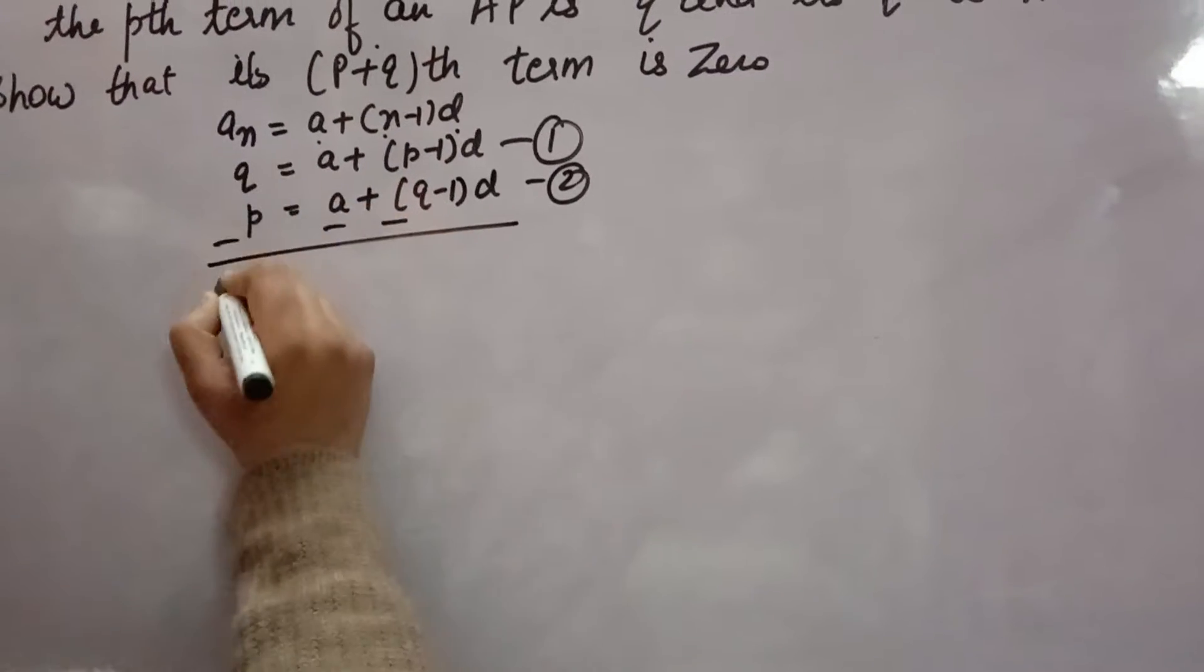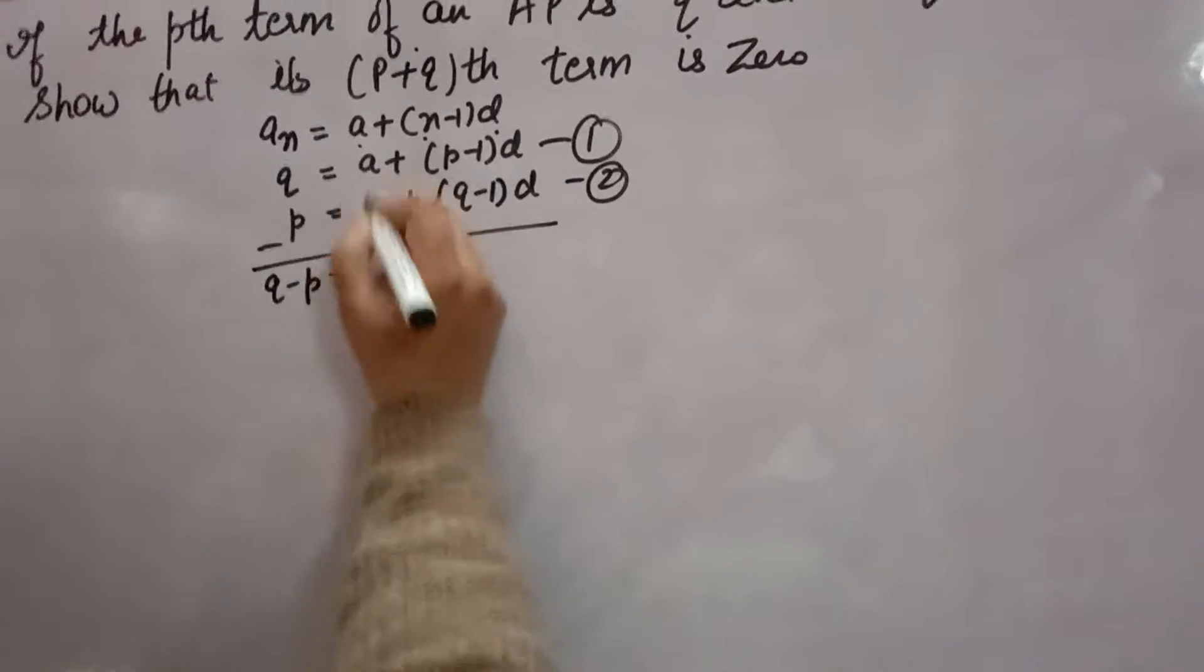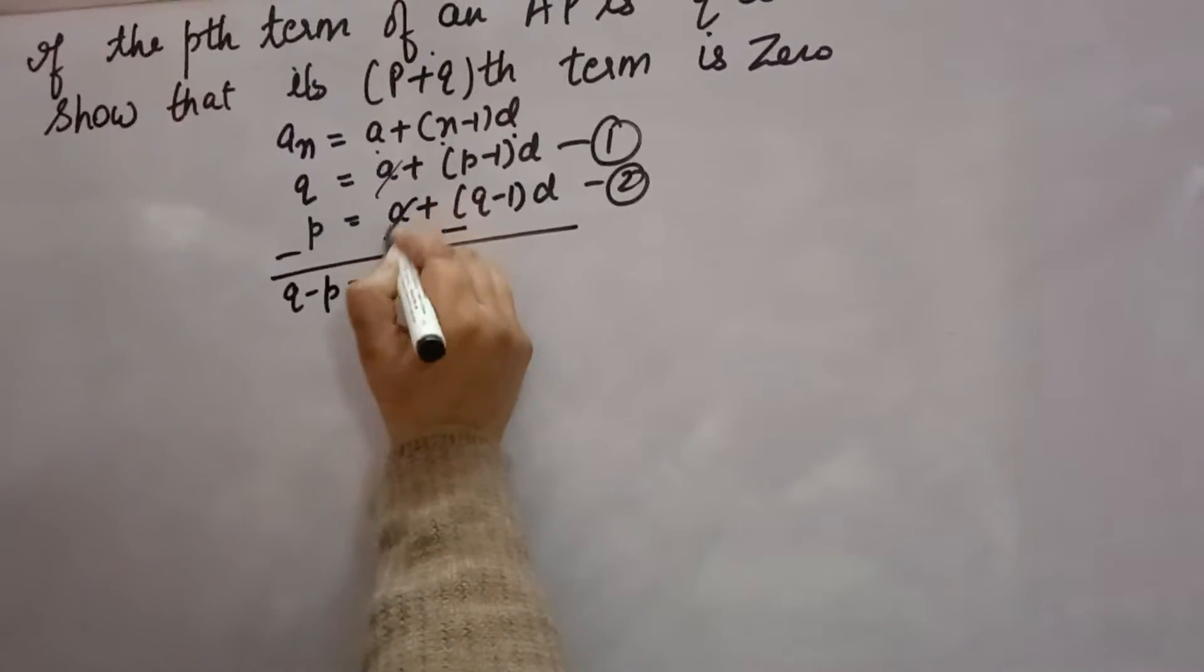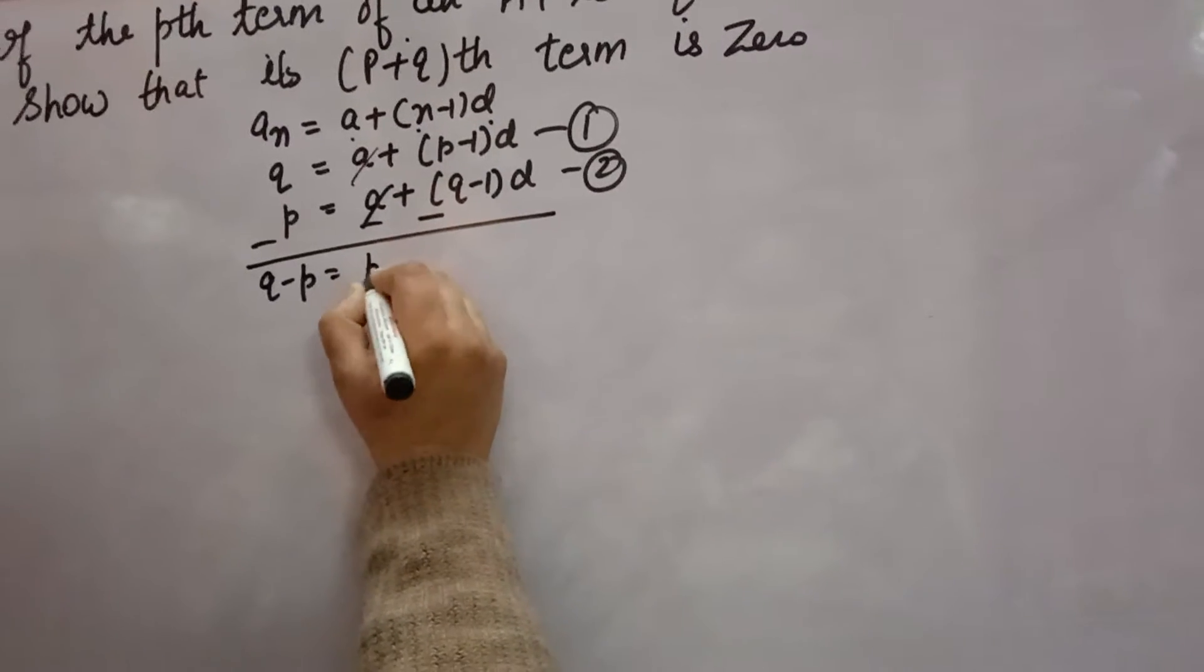From these equations, we will first find the value of D by subtracting them. Q minus P equals A minus A, which is 0, so we can cancel that. We get (p-1)D minus (q-1)D.